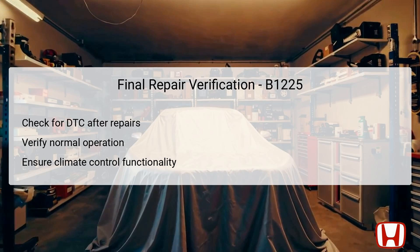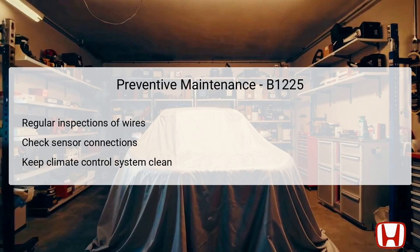Furthermore, a practical test should be conducted to confirm the normal operation of the climate control system, verifying that heating and cooling respond accurately to adjustments made by the driver. Preventive maintenance is an essential part of sustaining the Honda Accord's climate control system and avoiding issues like DTC B1225 in the future. Regular inspections of wires and connectors associated with the in-car temperature sensor can help identify wear or damage before they cause significant problems. Technicians should be vigilant about checking all connections to ensure they are secure and free from corrosion, as loose or corroded connections can lead to intermittent failures.